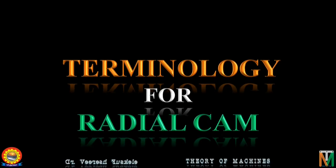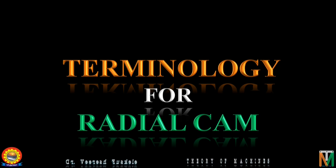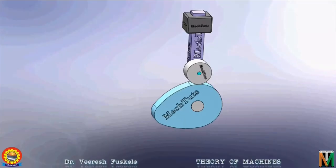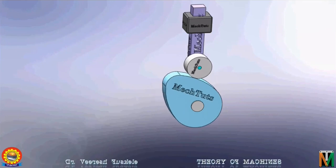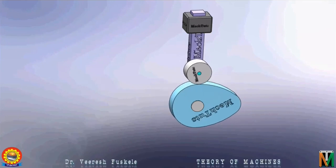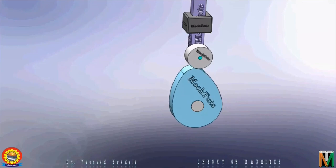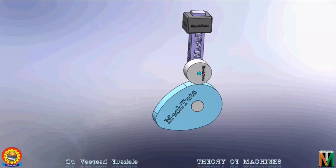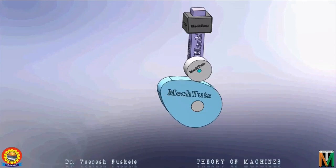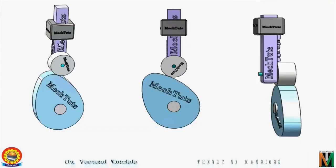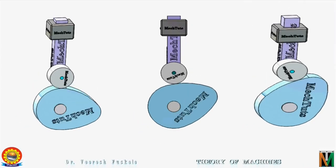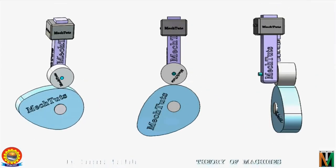Hello students, welcome to my YouTube channel MacTudes. In this video we will discuss the terminology for radial cam. Radial cams are cams in which the motion of the follower is in the direction perpendicular to the axis of rotation of the cam as shown here. This is the disc cam and roller follower arrangement in different views.